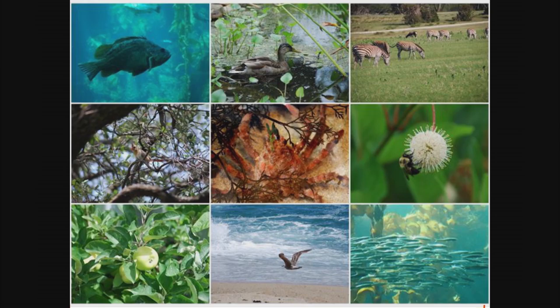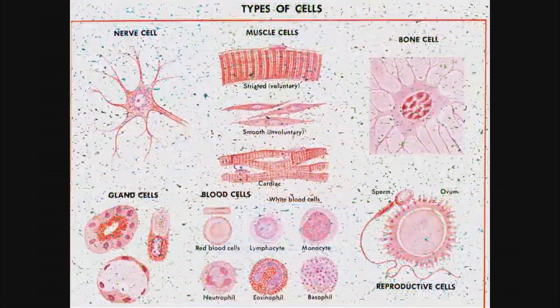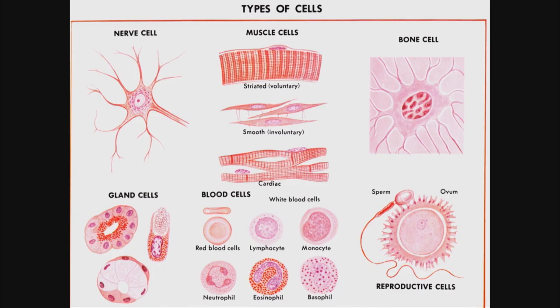Life is this incredible diversity of different types of living organisms. And what is in common for all of them is that they are made of different types of cells. Cells can look very, very different, although they have the same set of DNA. So it's RNA and proteins which make them so different.